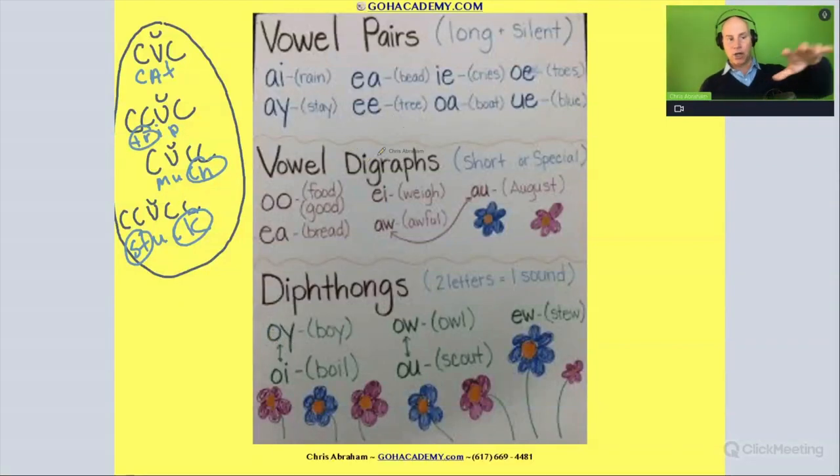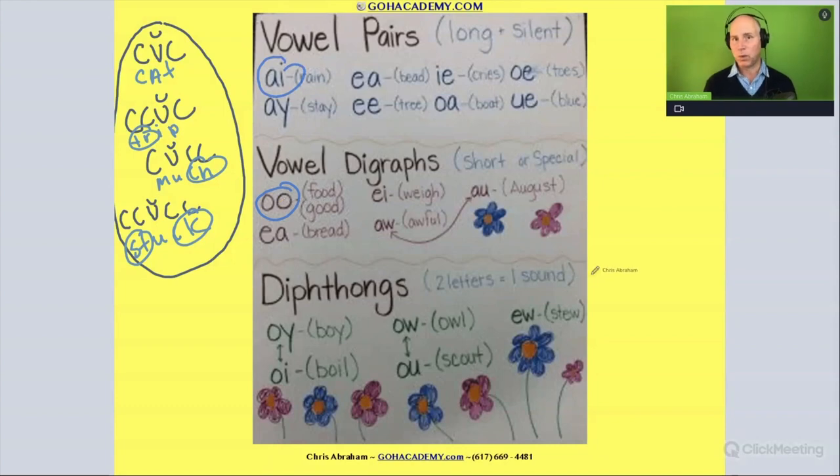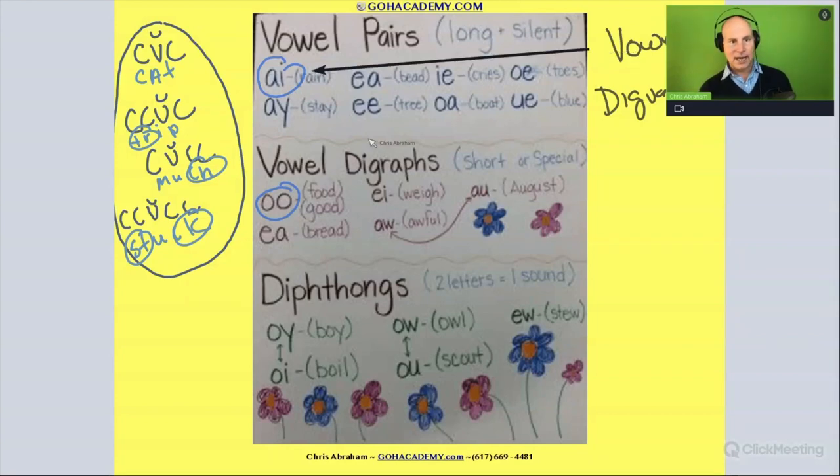And now let's talk about vowel digraphs and vowel pairs. Now, this can be a little tricky for teachers because you'll notice that these both have two vowels and they both make one sound. So actually, the best way to think about this is a vowel digraph is anything, any time you have two vowels that make one sound. And in this case right here, we have several vowel digraphs. This is a vowel digraph.